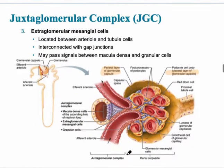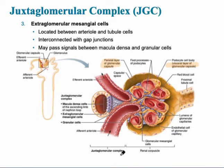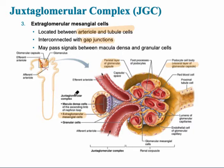The third cell type in this group is called the extraglomerular mesangial cell, and we can see that located right here. 'Extra' meaning it's outside, and it sits between the arterial and the tubule cells, connected with gap junctions. This allows signals to pass very quickly from the macula densa to the granular cells.